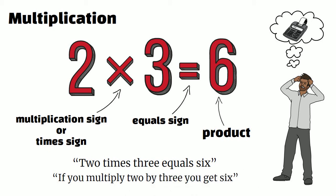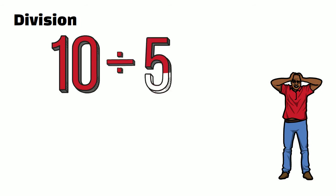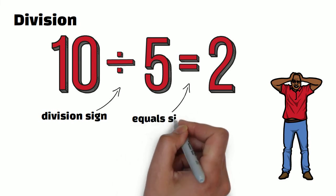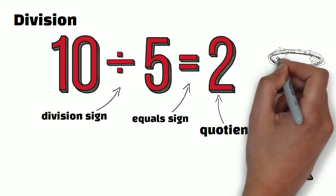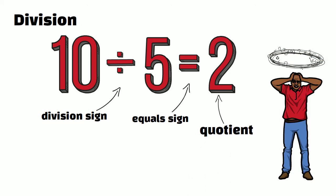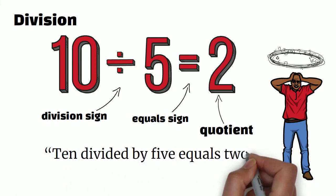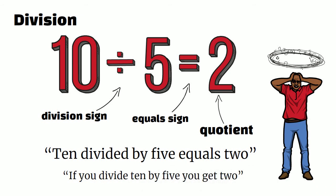Let's now move on to division. The symbols used here are the division sign and again the equals sign. The result of a division is called a quotient. We read the whole equation like this: '10 divided by 5 equals 2.' Or if you wanted to explain this to someone, you could say 'if you divide 10 by 5, you get 2.'